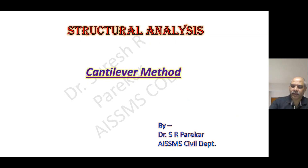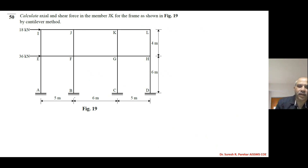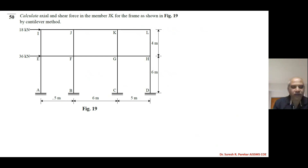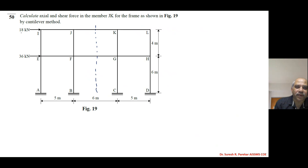Good evening. Today we will see a second problem on the cantilever method — a type of problem not covered in class. We can observe that this structure is symmetrical with respect to the span base, and therefore we will get the centroid at the center, that is 8 meters from the left or 8 meters from the right.